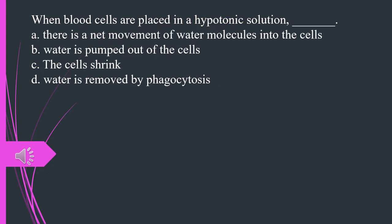When blood cells are placed in a hypotonic solution, A. There is a net movement of water molecules into the cells. B. Water is pumped out of the cells. C. The cells shrink. D. Water is removed by phagocytosis. The answer is A. There is a net movement of water molecules into the cells.